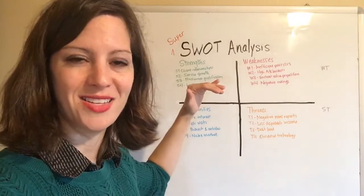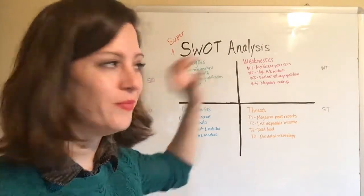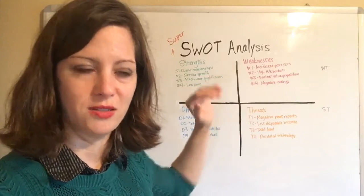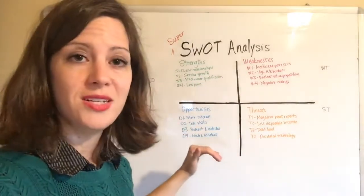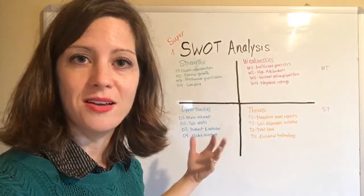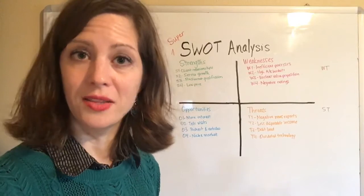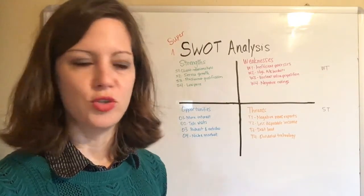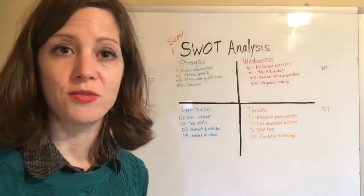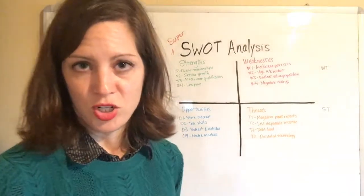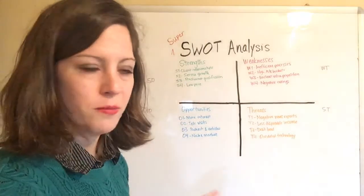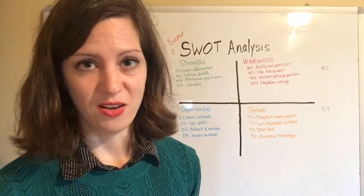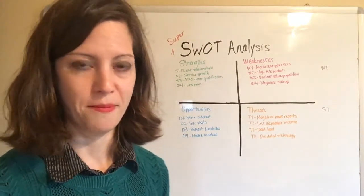All of the strengths your practice has — things that are going well — all the things that are not going well and how you're not achieving your strategic objectives. Outside opportunities and the PESTEL list of political, environmental, social, and other types of marketplace changes and shifts that could impact your company, and threats that could really make your company fail.